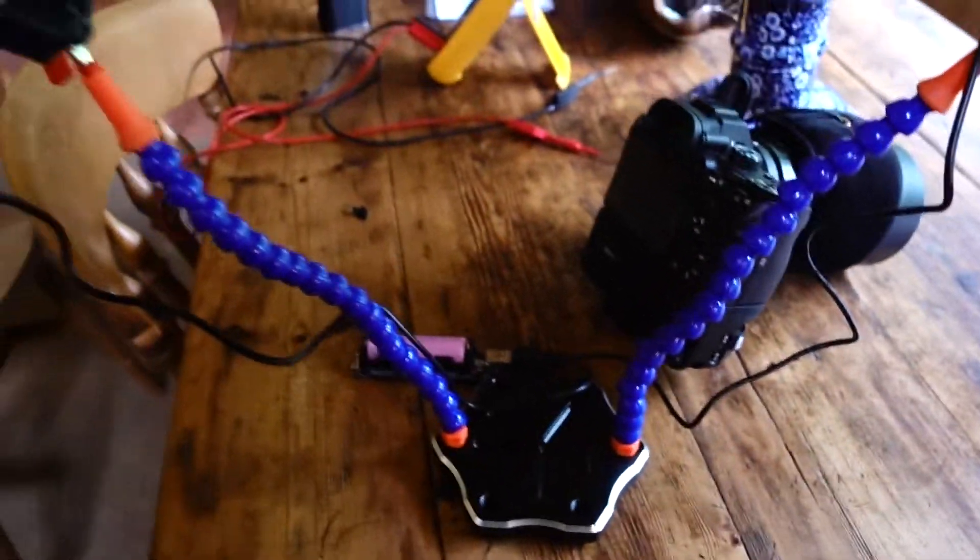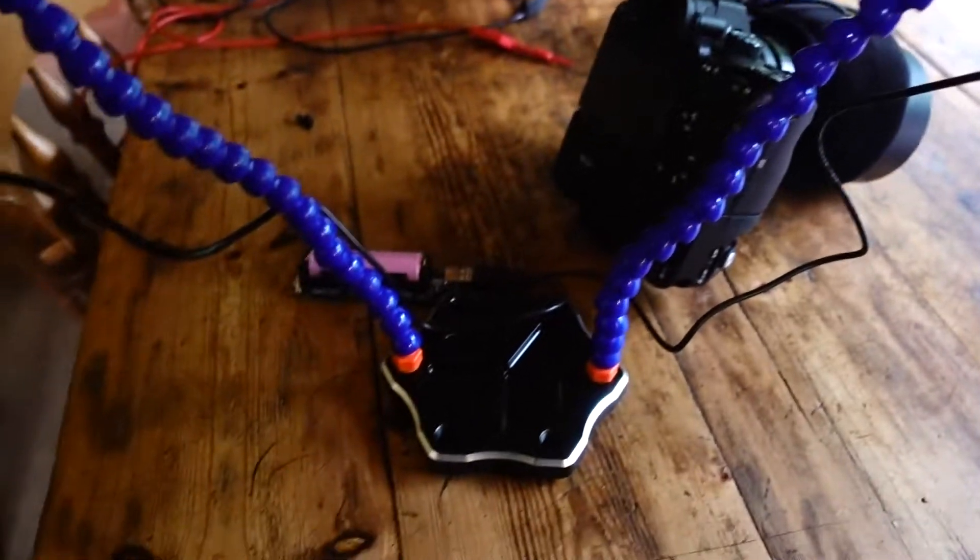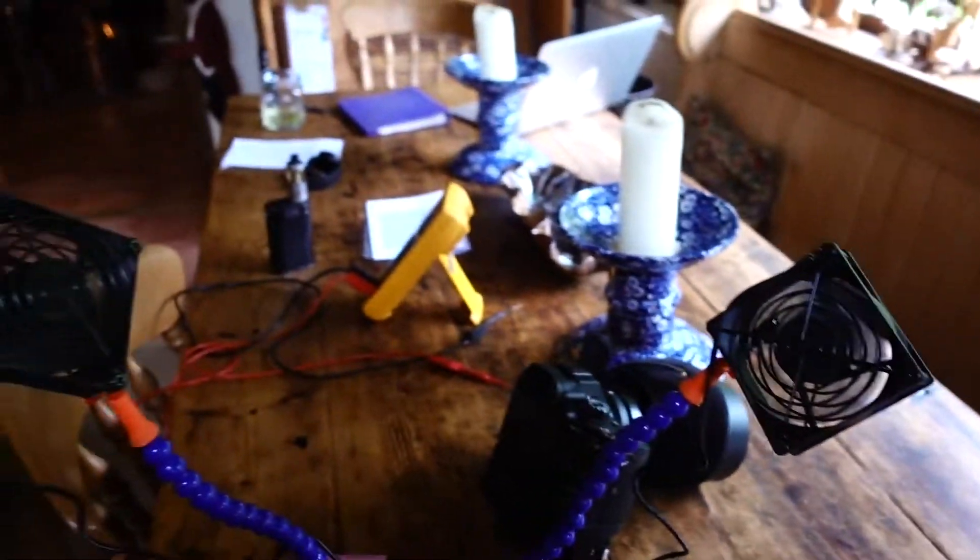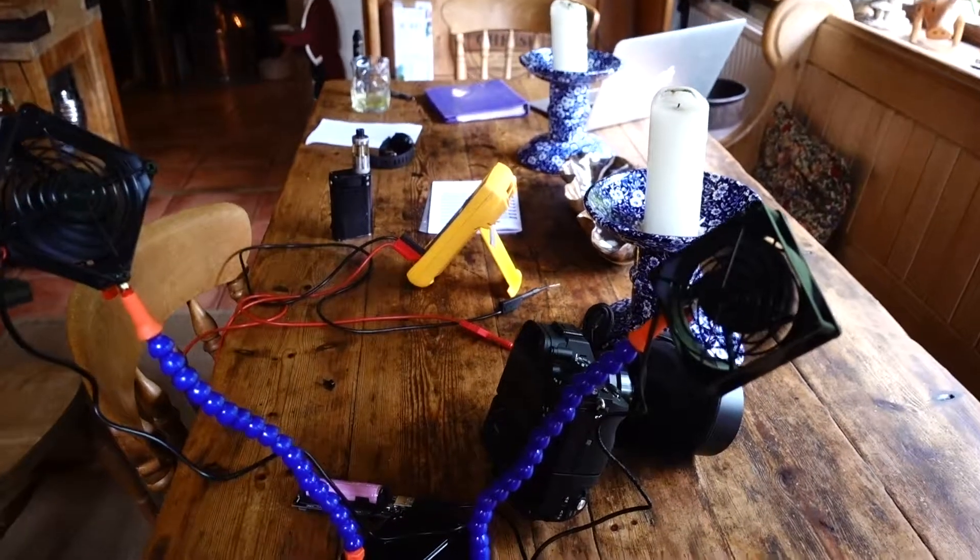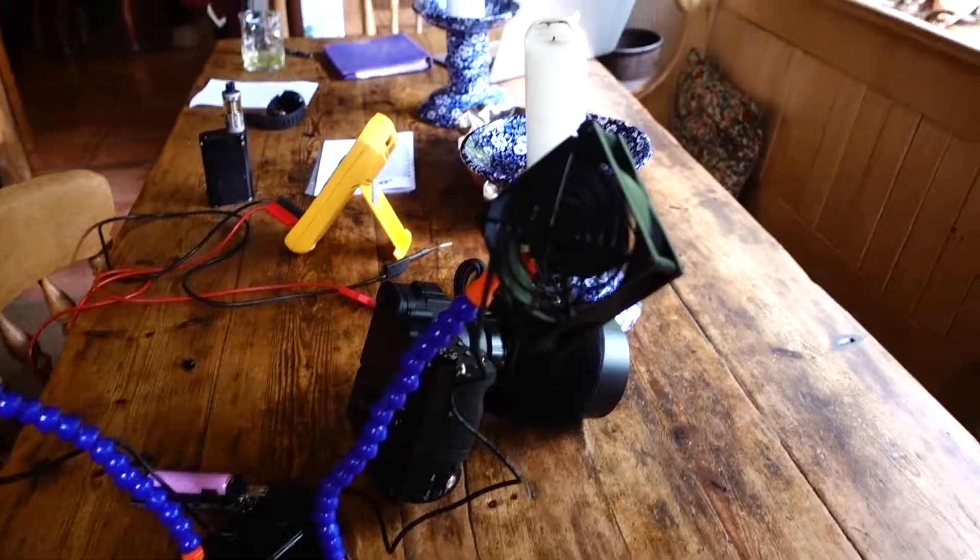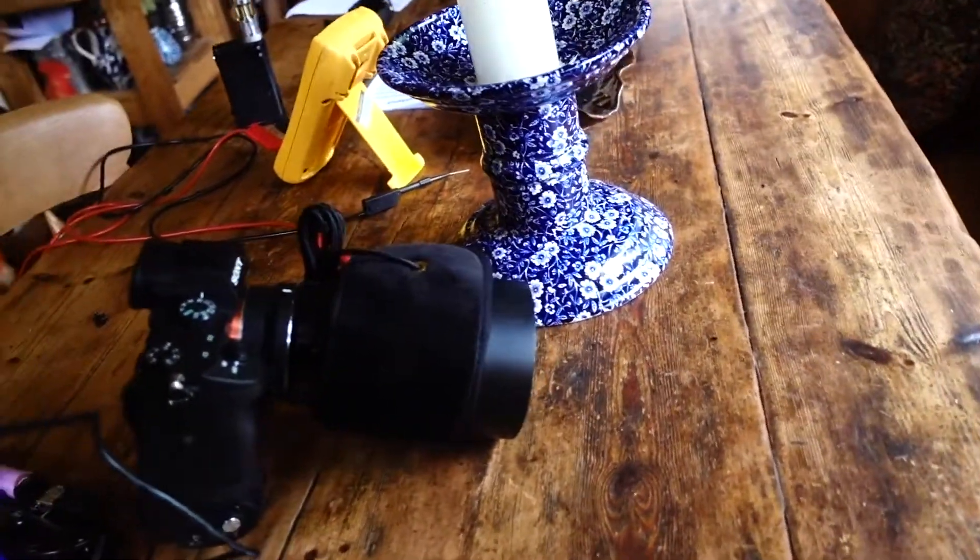And then I bought one of these things, which is an arm. It's supposed to be for soldering, but it holds the fans nicely. So if you've got two cameras set up, you can aim it directly at the lens on a separate tripod, so you don't get vibration.